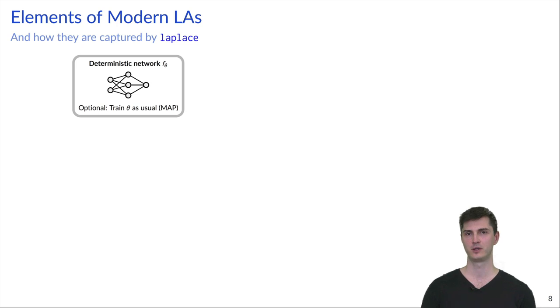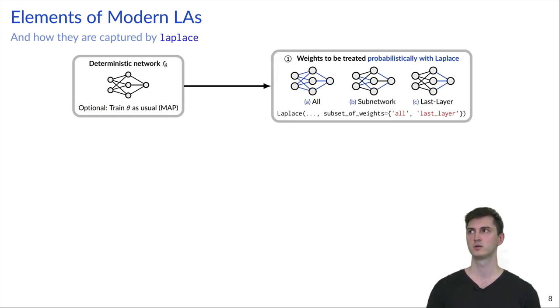We've seen that it's very easy to apply the library, but you also have the choice to explore the design space of modern Laplace approximations. I'll guide you step by step through the possible design decisions. The first step is you have your deterministic network F theta. Then the first choice you have to make is which weights should actually be treated probabilistically. You can use all weights, a sub-network of weights or only the last layer. And the corresponding keyword in the Laplace interface is subset_of_weights.